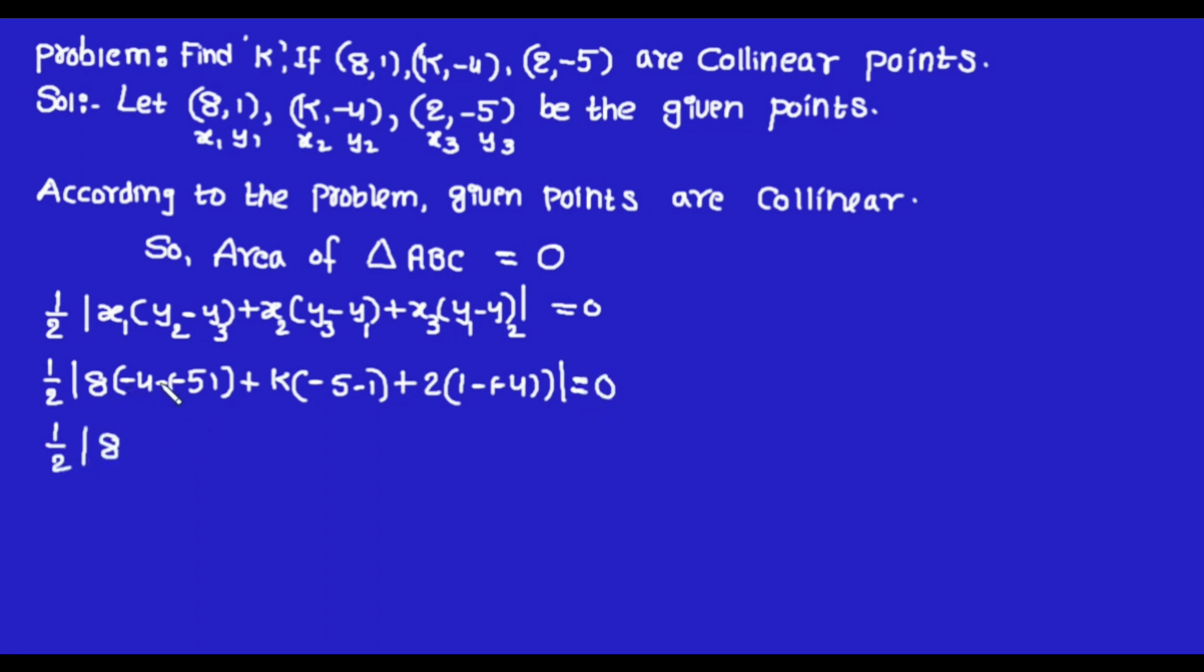After simplification, the above step can be written as 1/2 times the determinant of 8 - 6k + 10 = 0.